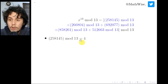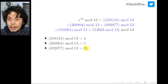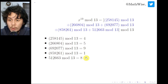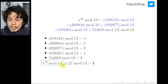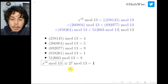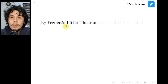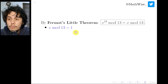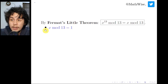Computing the five remainders manually: 258145 mod 13 = 4, 266804 mod 13 = 5, 692077 mod 13 = 9, 858261 mod 13 = 1, 512663 mod 13 = 8. Adding these: 4 + 5 + 9 + 1 + 8 = 27. Then 27 mod 13 = 1. So x^13 mod 13 = 1, which by Fermat's Little Theorem means x mod 13 = 1.